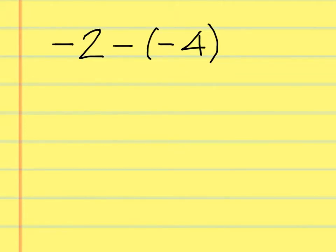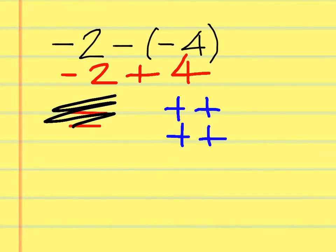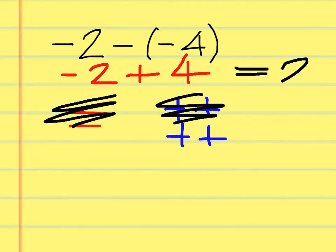Negative 2 minus a negative 4. What can I trade out a double negative for? I can trade it out for a plus. So negative 2 plus 4. I have 4 plus signs and then 2 negative signs. When I cancel those out, what am I left with? 2 positives, so the answer is 2.